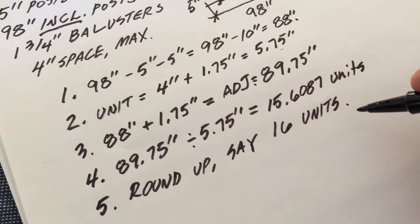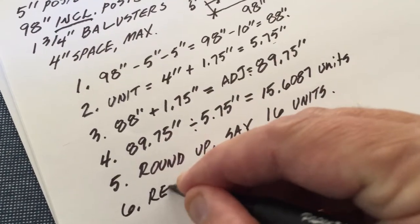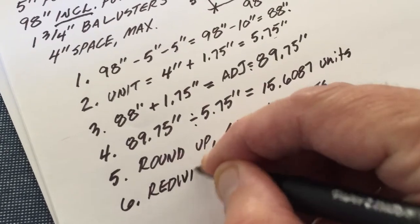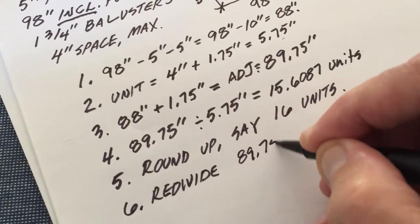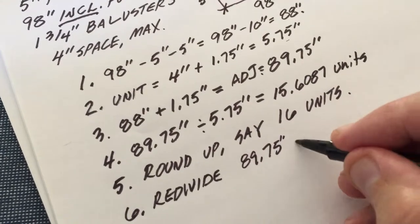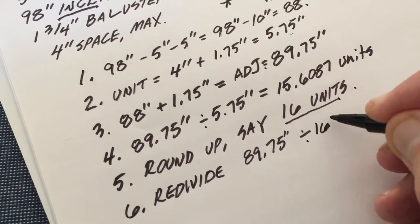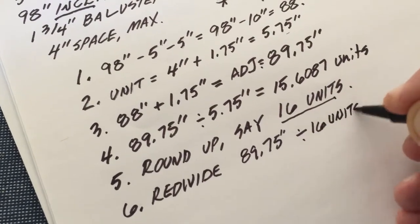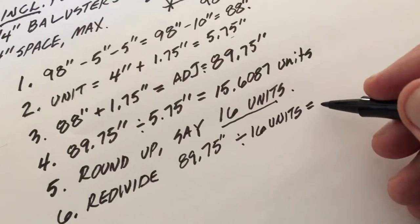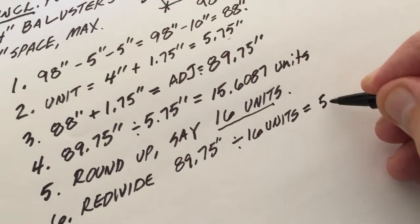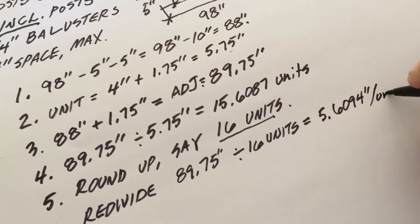And then I'm going to re-divide. I take that 89.75 inches and this time I divide it by the number of units I know I'm actually going to build - 16 units - and it'll tell me how big the space is actually going to be including the baluster. In this case, 5.6094 inches per unit.